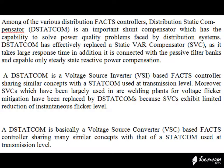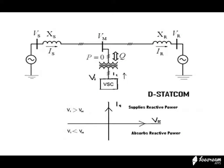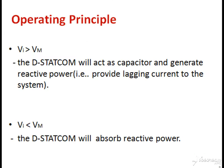This is a basic block diagram of a D-STATCOM. It consists of a disturbance identification controller block, a controller and PWM technique block, and a VSC. Here VM is the voltage at the point of common coupling and VI is the voltage of the device. The basic principle is: if VI is greater than VM, it supplies reactive power, and if VI is less than VM, the device will absorb reactive power.